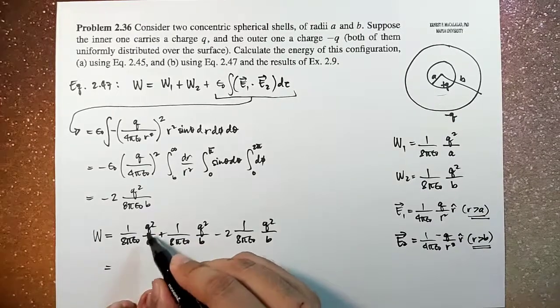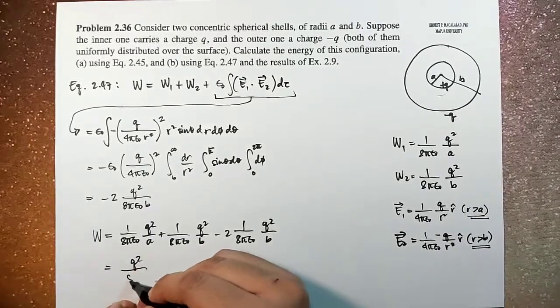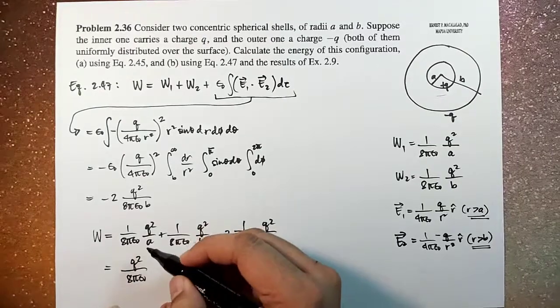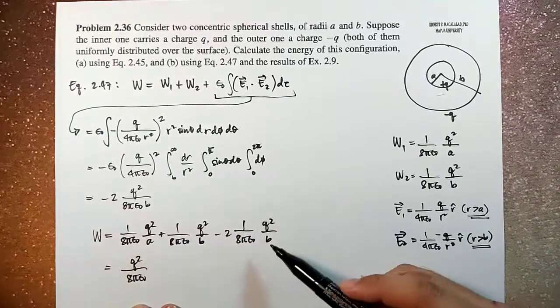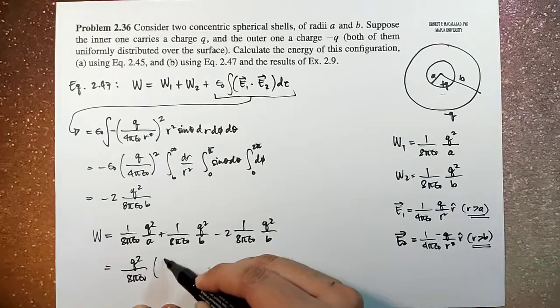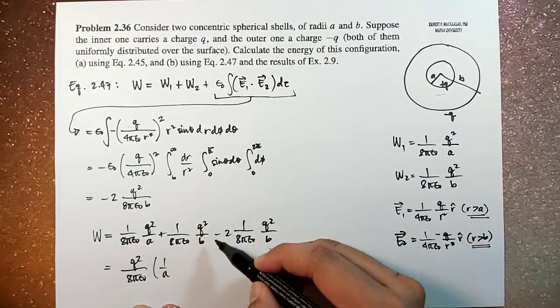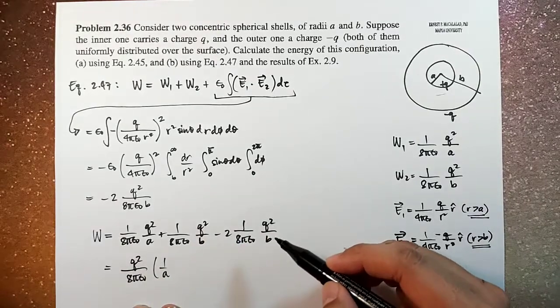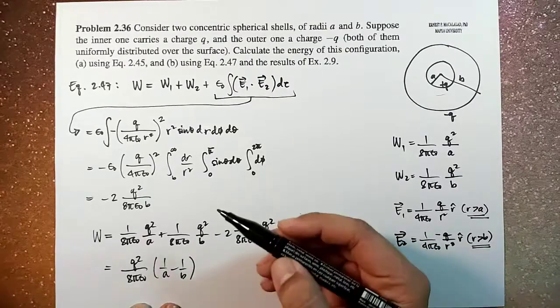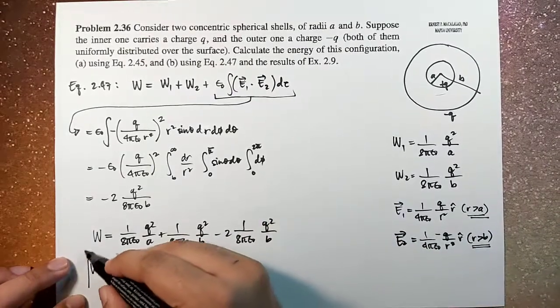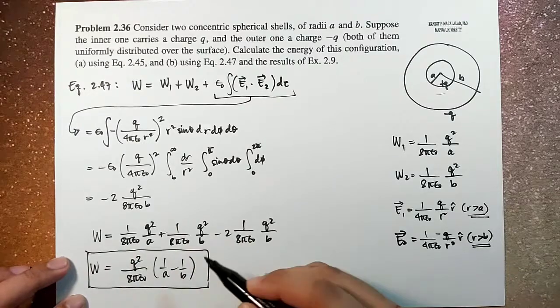So this is Q squared over 8 pi epsilon naught times 1 over A, and then this is 1 over B minus 2 over B. So that's 1 over A minus 1 over B. And this is now the result.